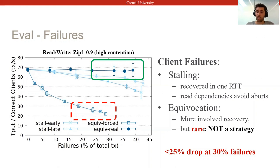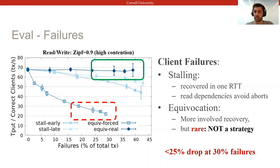Overall, we can show that despite more than 30% of total transactions being faulty, Basel remains not just live, but has robust performance since failures only affect contending transactions, and when they do, they can be recovered swiftly.